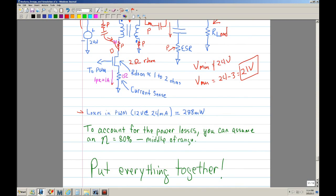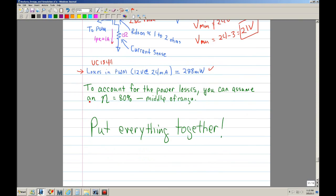You also even have power losses due to your PWM. The UC 1844, I think, consumes about 24 milliamps at 12 volts. So that's 288 milliwatts of power. To account for the power losses, you can assume an efficiency of 80%. Why 80%? It's kind of the middle of the range, and that's a pretty good number. And once you build it, then you can adjust that. But 80% would be a good number to start. So let's go ahead and put everything together.